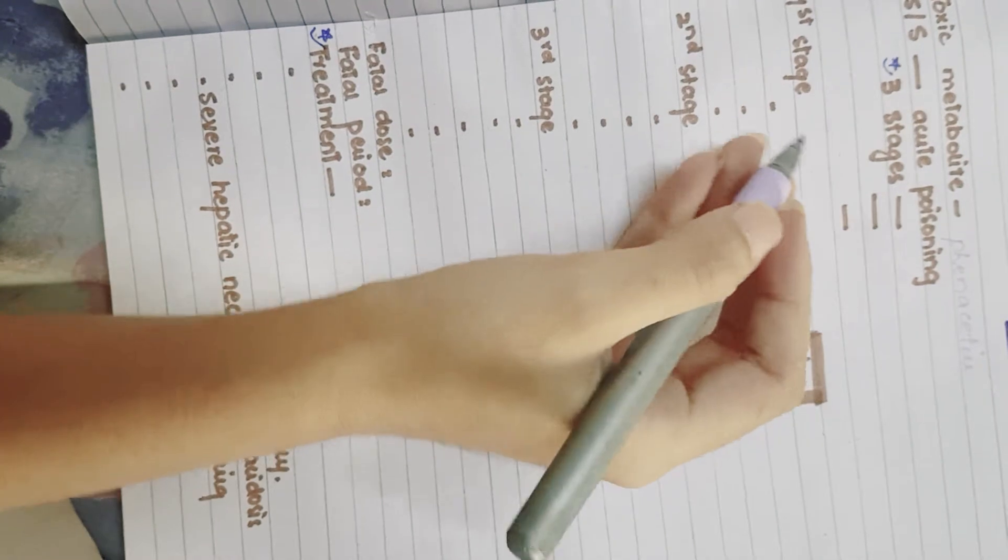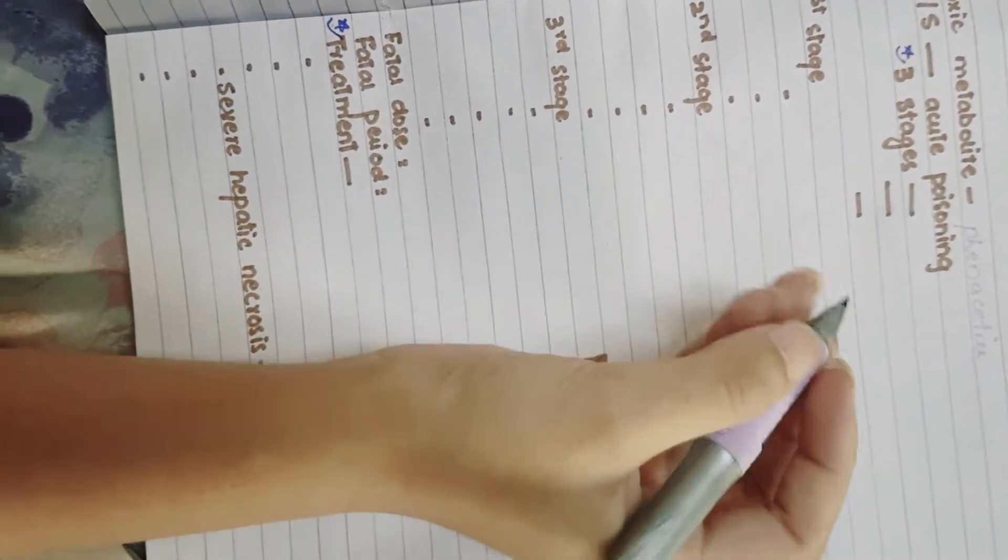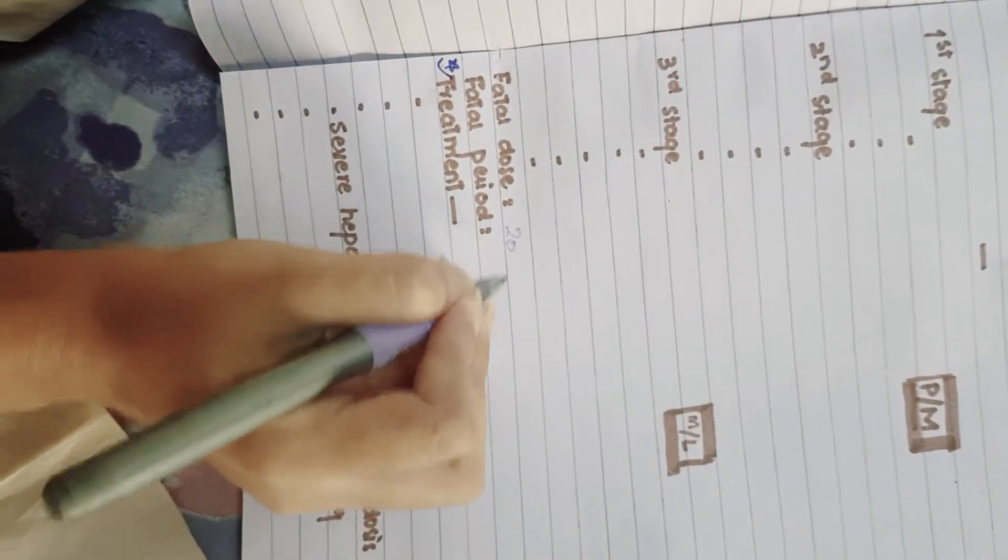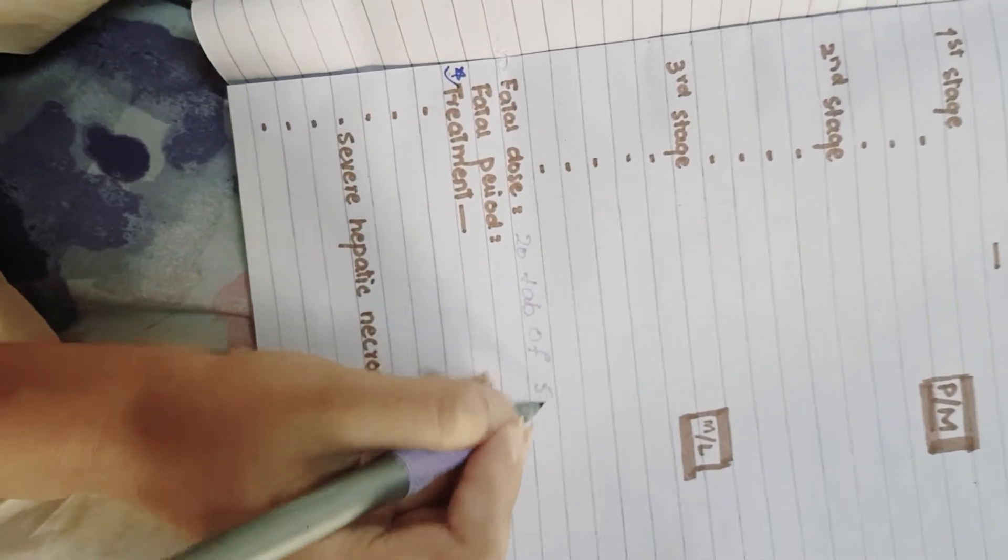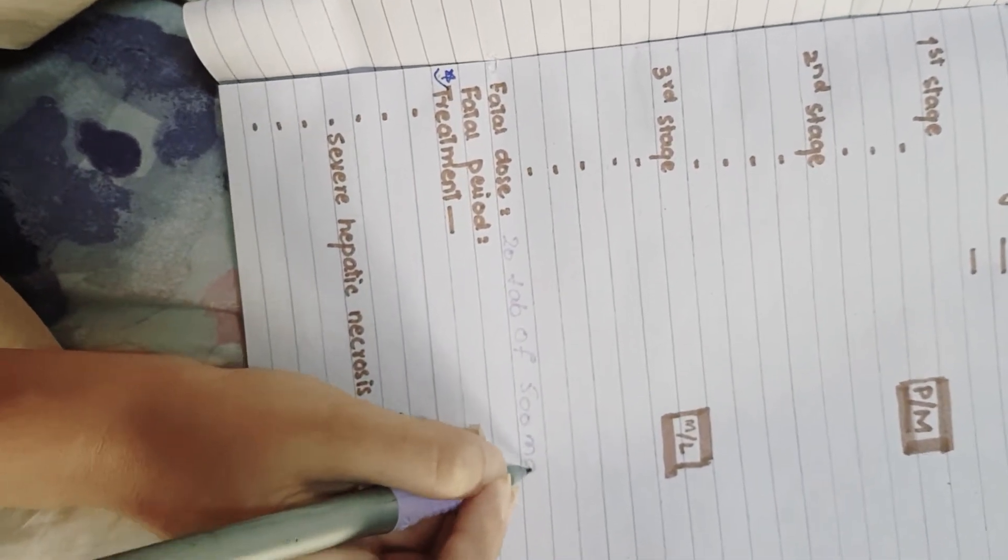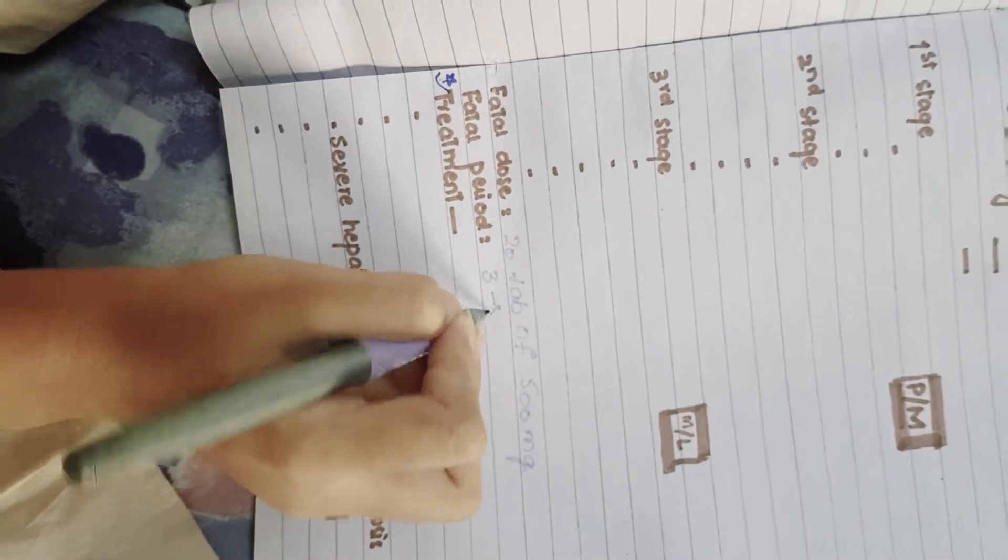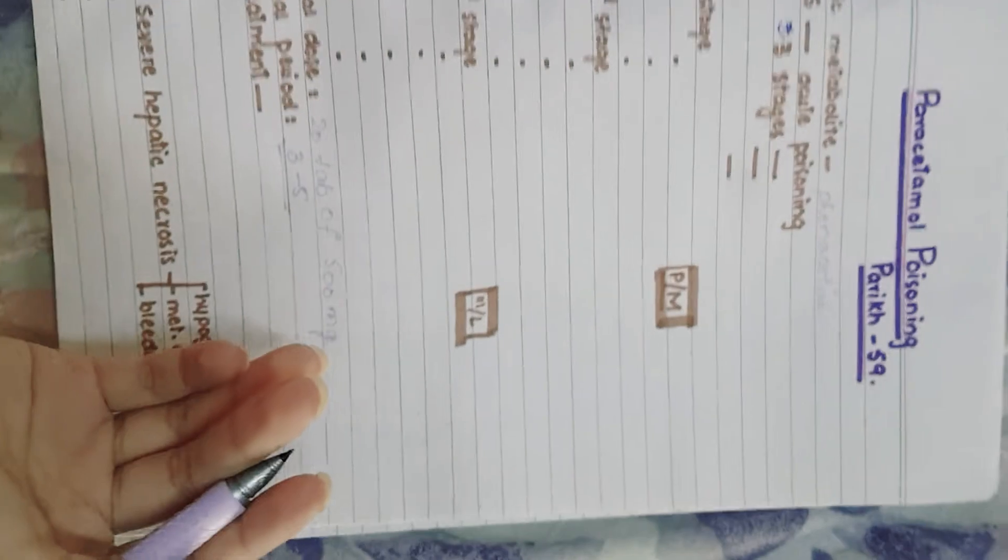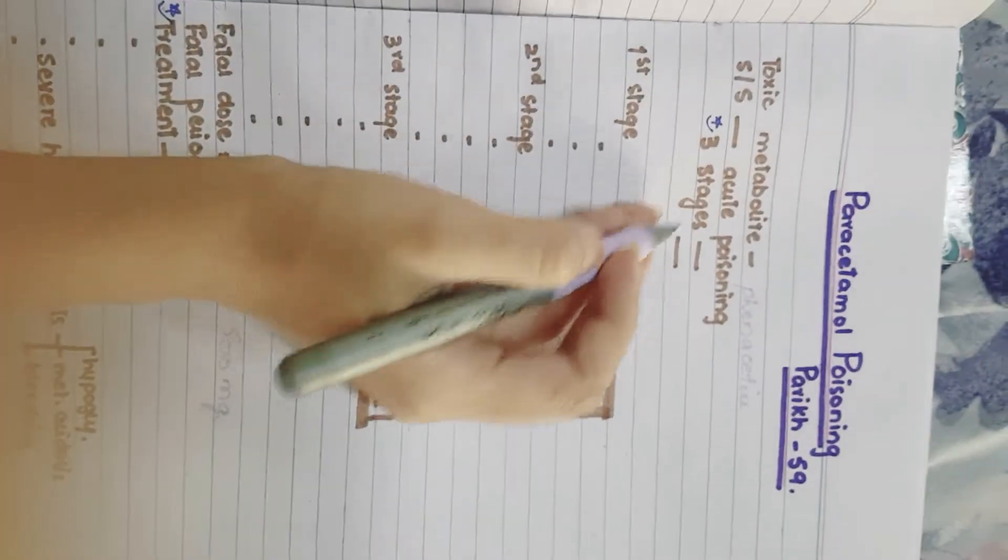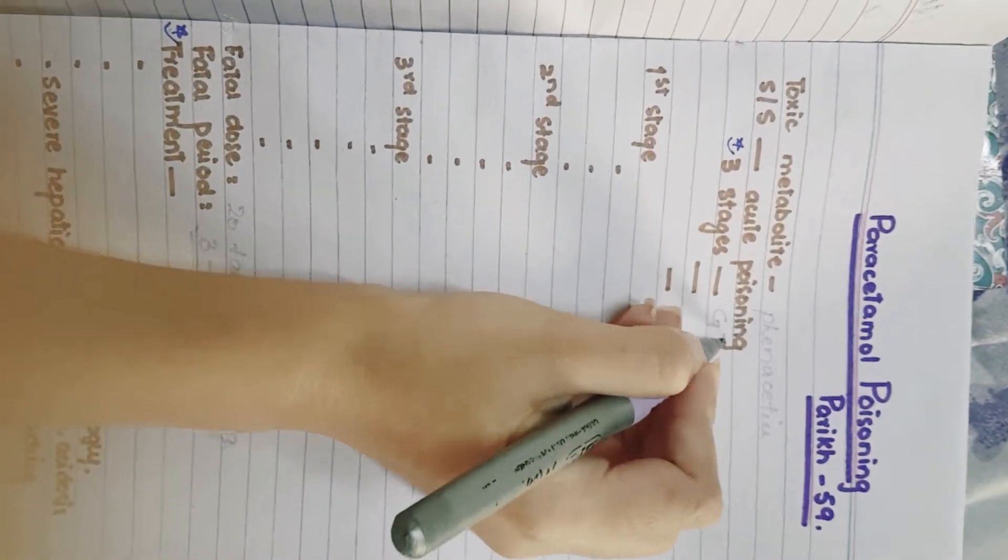When taken at the dose of 20 tablets of 500 mg for three to five days, paracetamol is proved to be fatal. There are three stages: first is gastrointestinal stage.